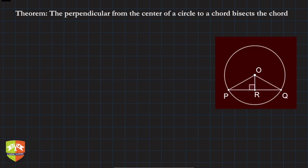Let us understand this theorem. It says the perpendicular from the center of a circle to a chord bisects the chord. You are dropping a perpendicular from the center O onto a chord PQ, and the foot of the perpendicular is R as shown in the picture.